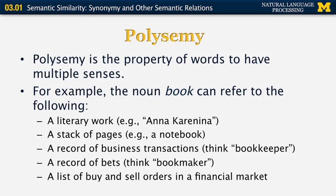Another property of words is polysemy. Polysemy is the property for words to have multiple senses — this is what you typically see in a dictionary. If you look up the word 'book,' you will see it can refer to many different things: a literary work (for example, Anna Karenina by Tolstoy), a stack of pages which may or may not be blank (a notebook), a record of business transactions (think of a bookkeeper), a record of bets (a bookmaker takes bets), and also a list of buy and sell orders in a financial market.